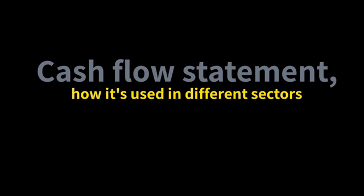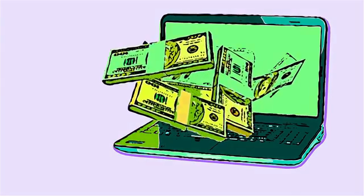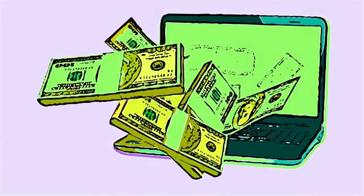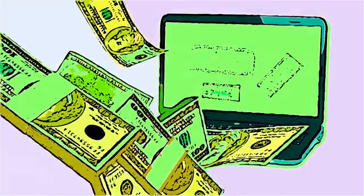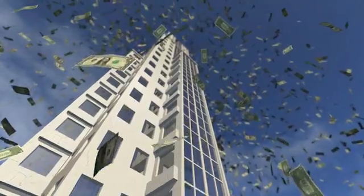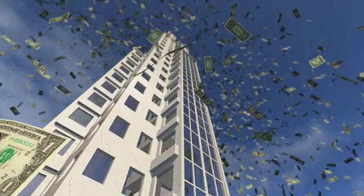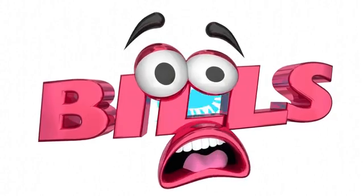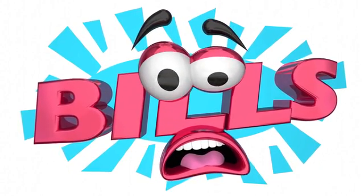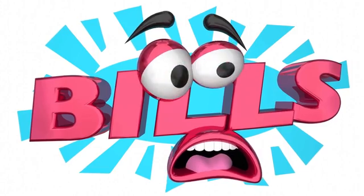The cash flow statement — how it's used in different sectors and how to interpret it. The cash flow statement is a company's operations painted in a nutshell; it shows where they get their money and how they spend it. The statement of cash flows helps creditors determine whether the company is able to use its available cash to fund operating expenses and pay down its debts. The CFS is also important to investors because it tells them whether or not a company is in good financial condition, helping them make better investment decisions.